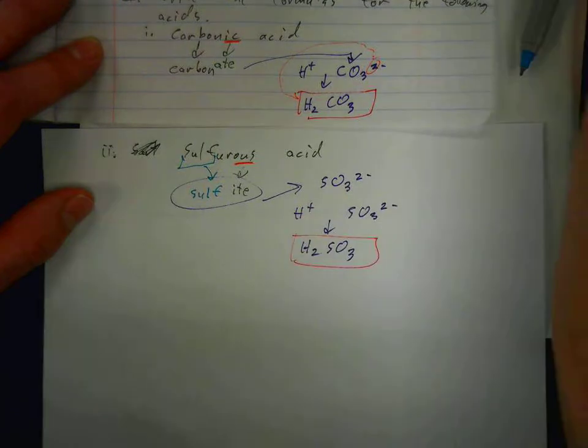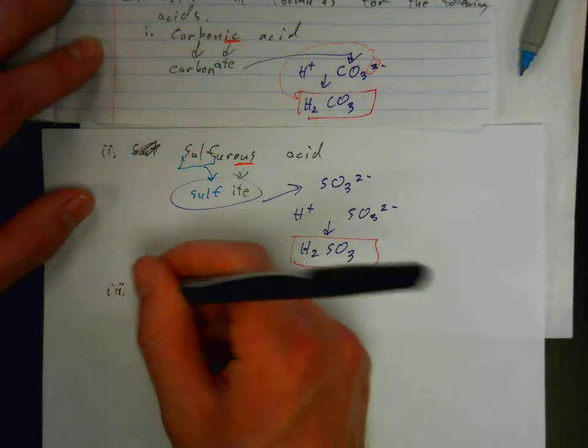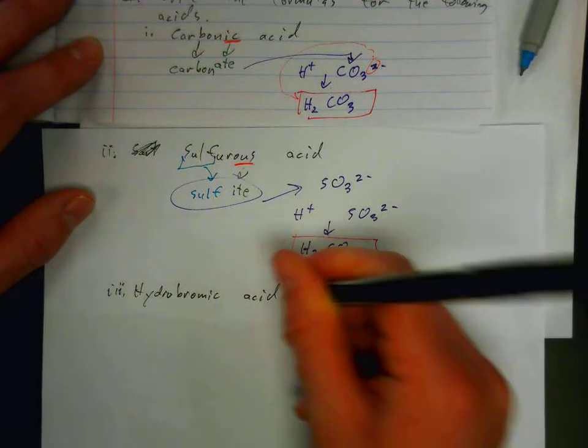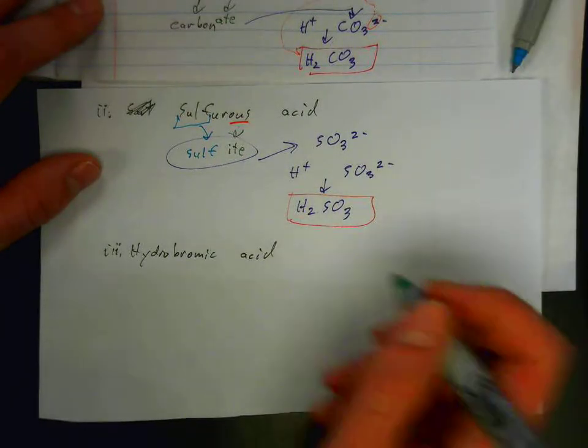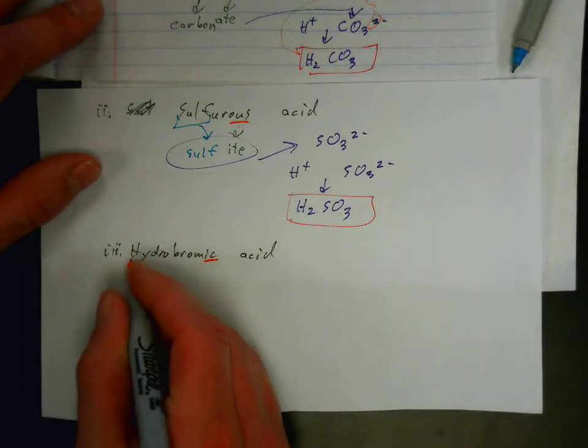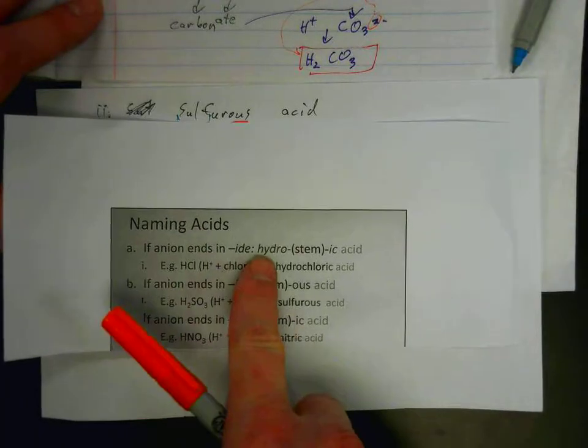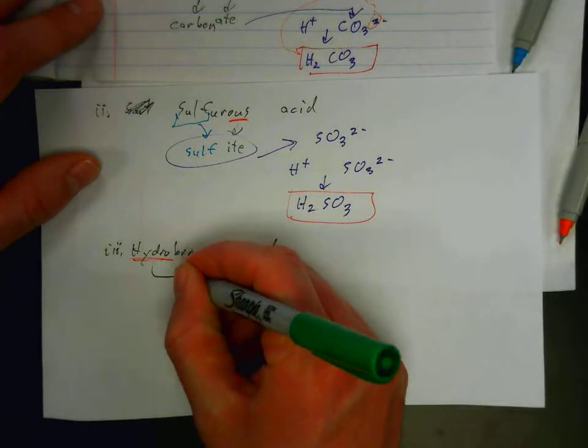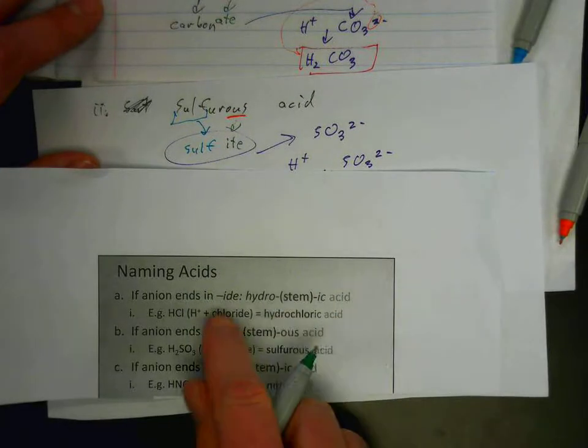Next, we have hydrobromic acid. We look at the parts of the name. In this case, we have IC at the end, but we also have a prefix here, hydro. So that means we are looking at this rule, hydro stem ic acid. The IC and the hydro, both of those together mean that we have an anion that ends in IDE.